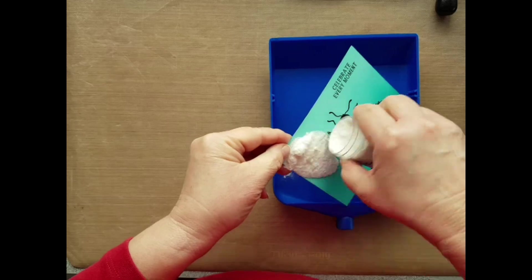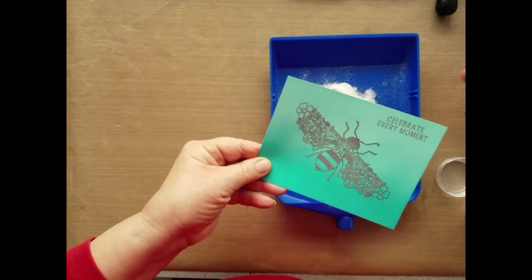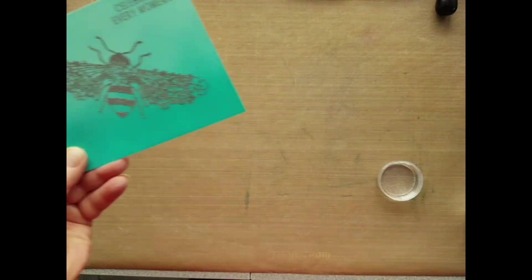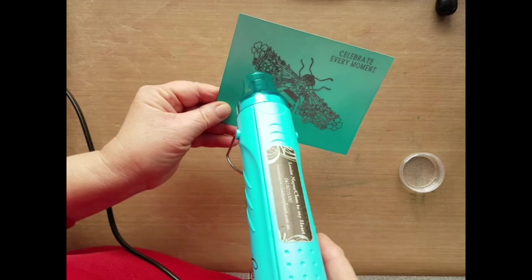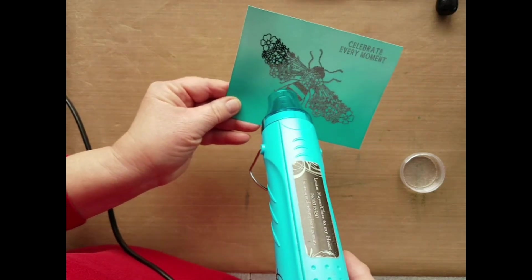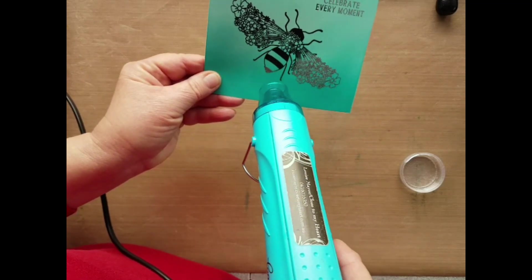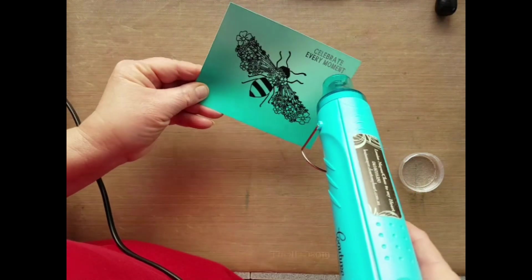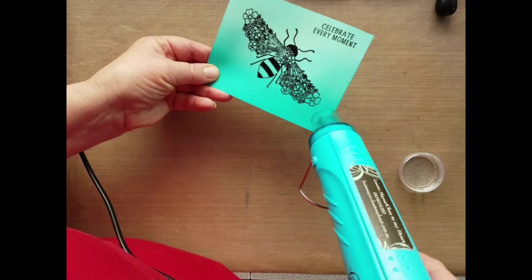Here's the white embossing powder. Remove any stray pieces of embossing powder, get your heat tool and watch the magic happen as we heat up our embossing powder. It just looks so beautiful with the Distress Oxide background.